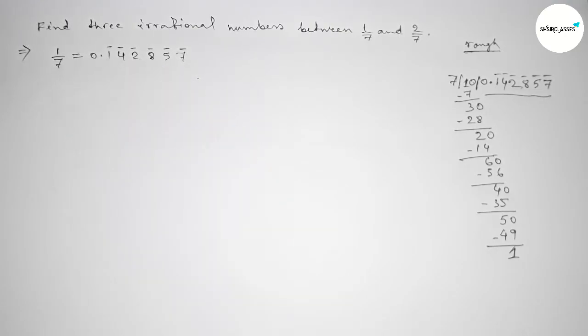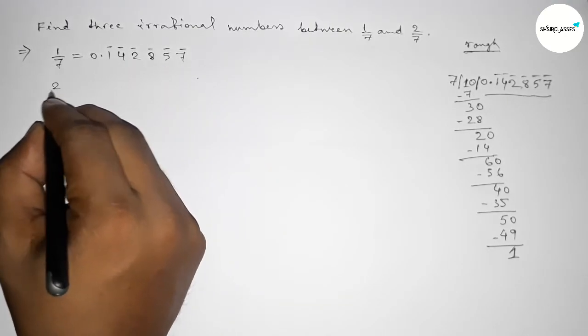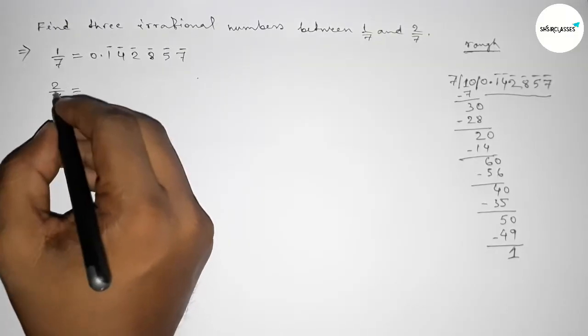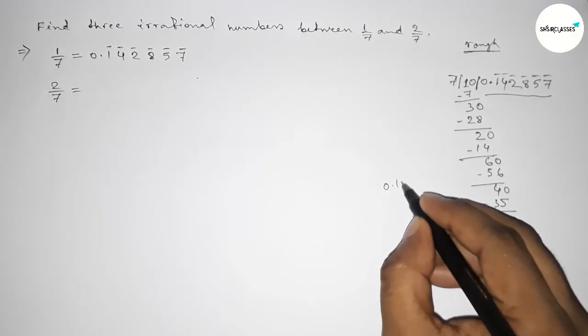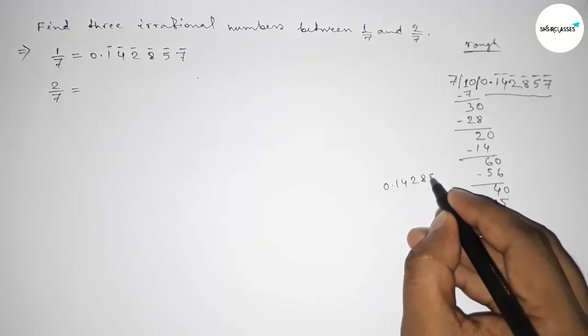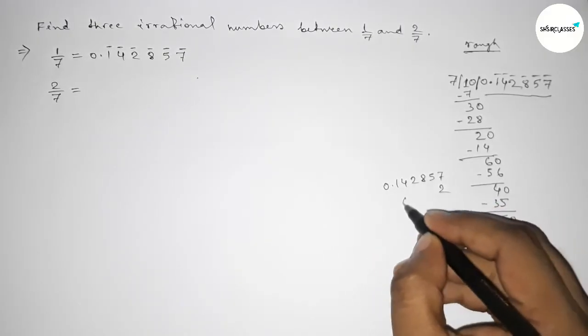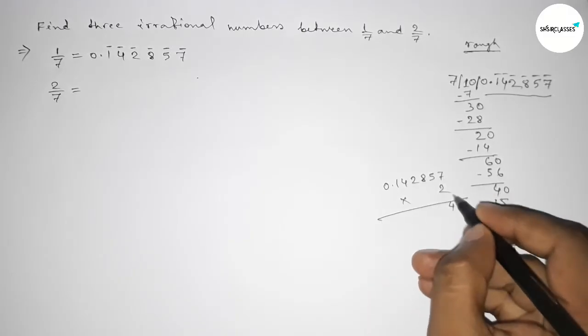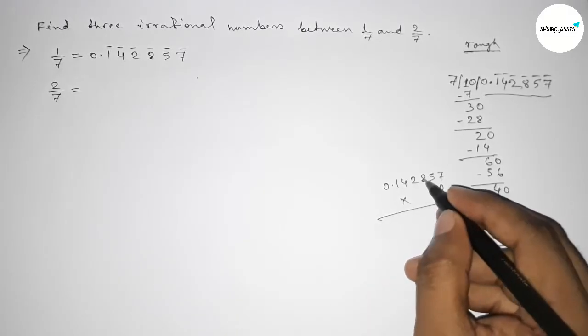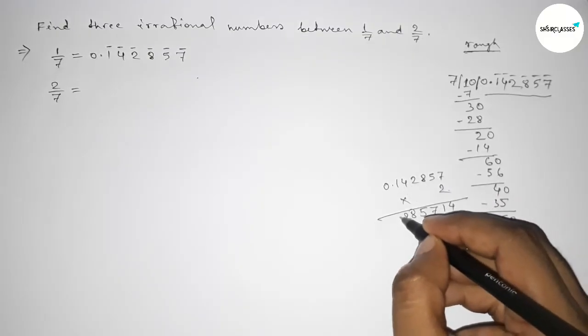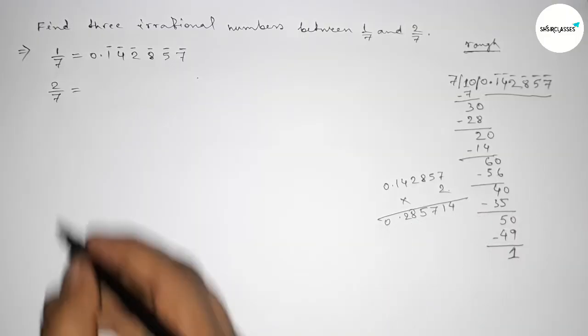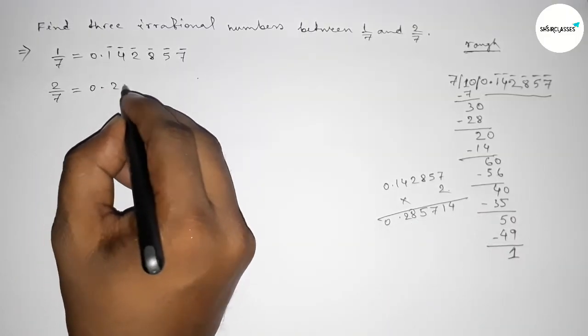Now write down the value of 2 over 7. If you want to find the value of 2 over 7 by division method, that's your homework. Now I am simply multiplying 2 with this recurring decimal, so this is 0.285714 and this is also a recurring decimal number.